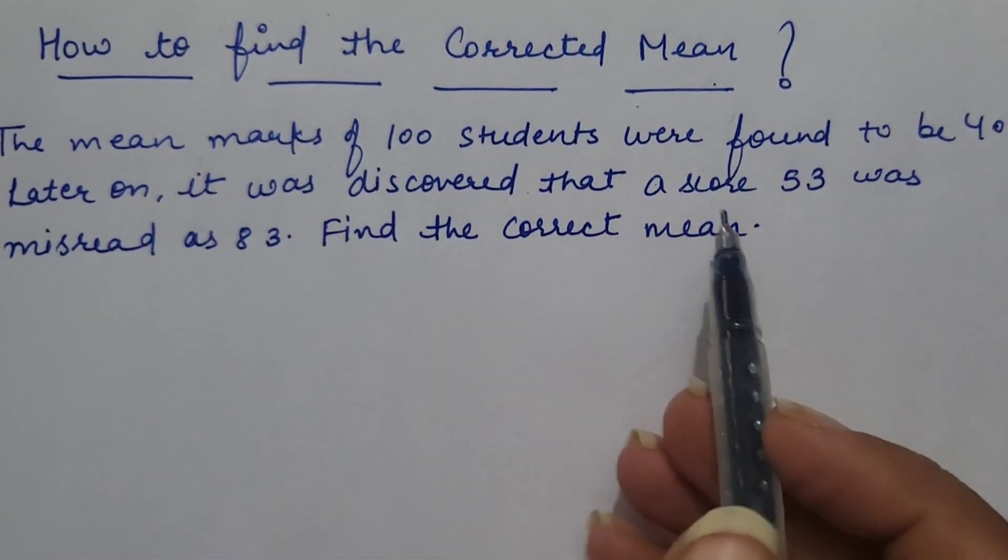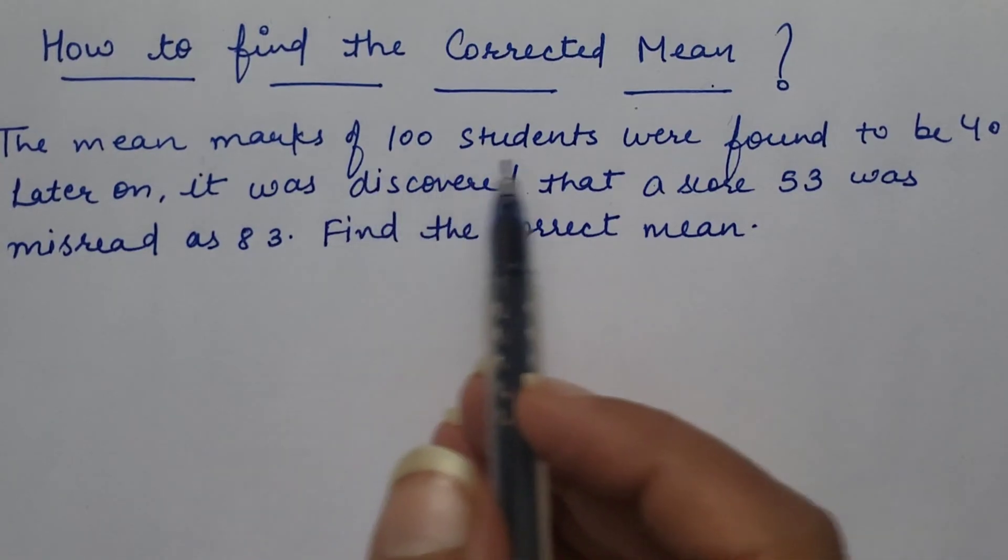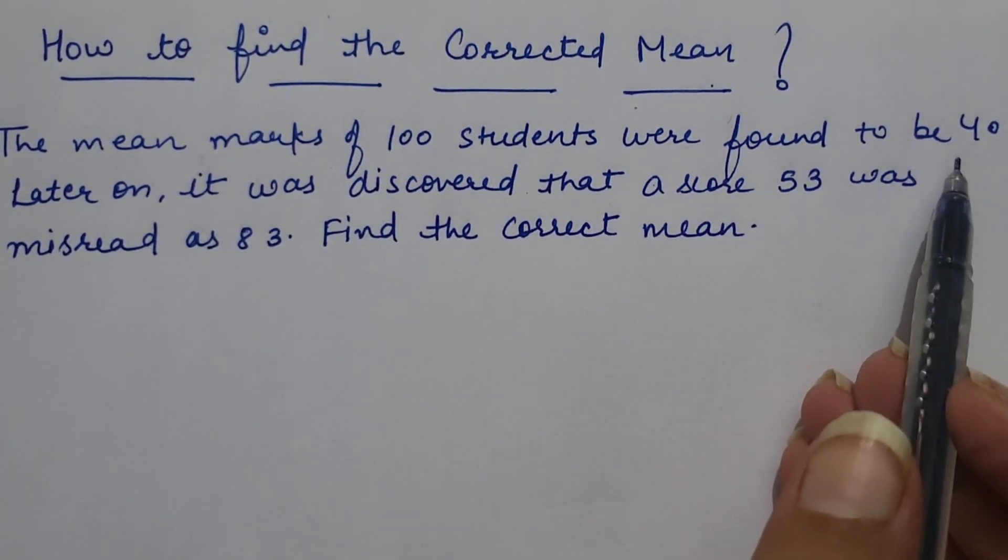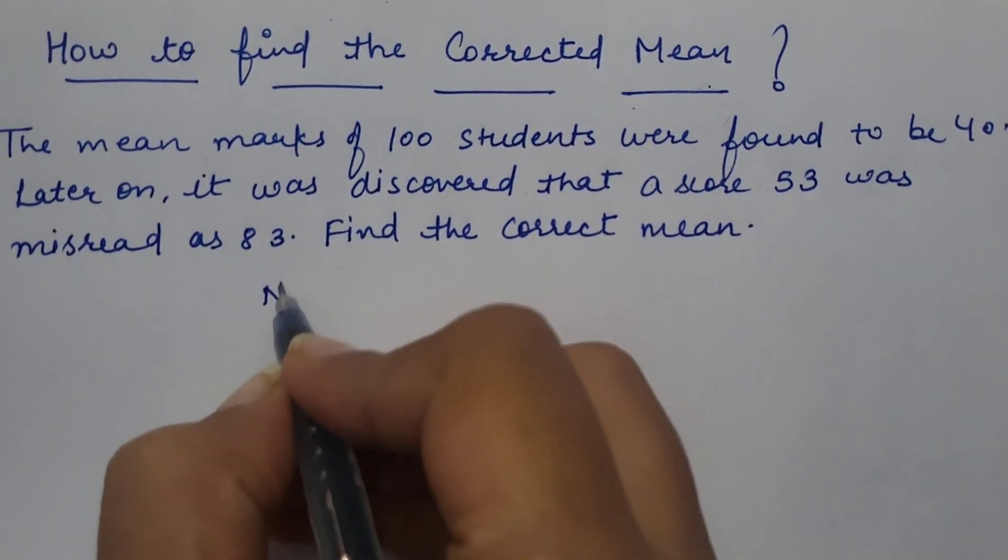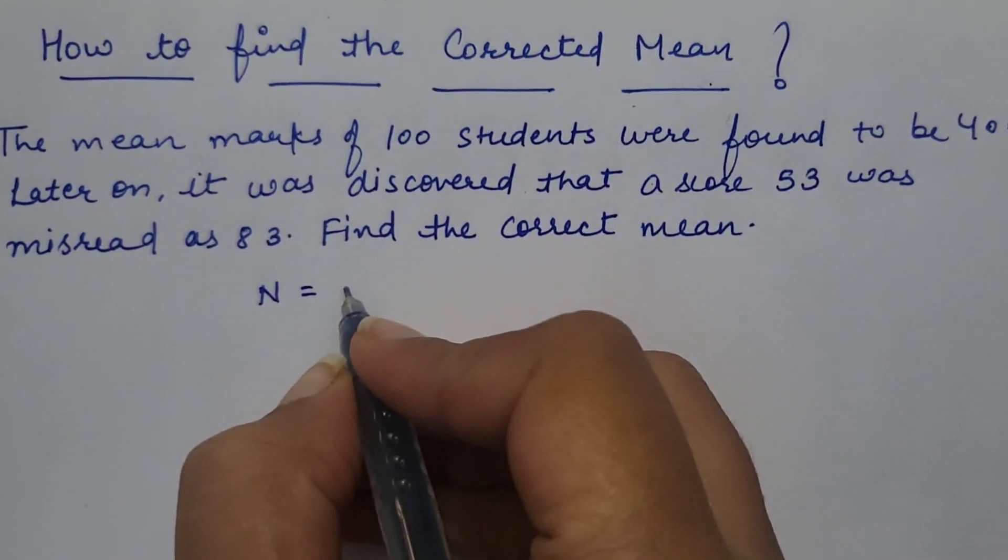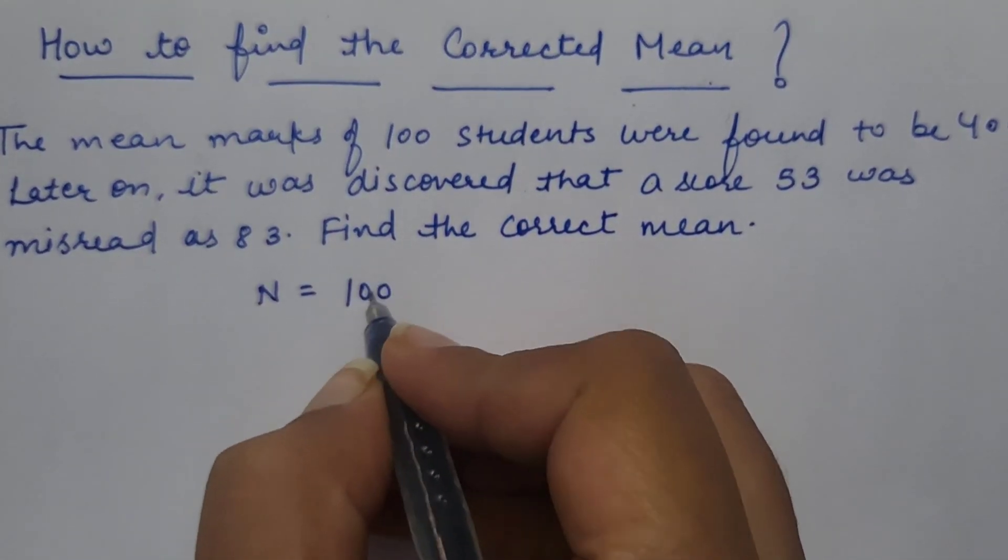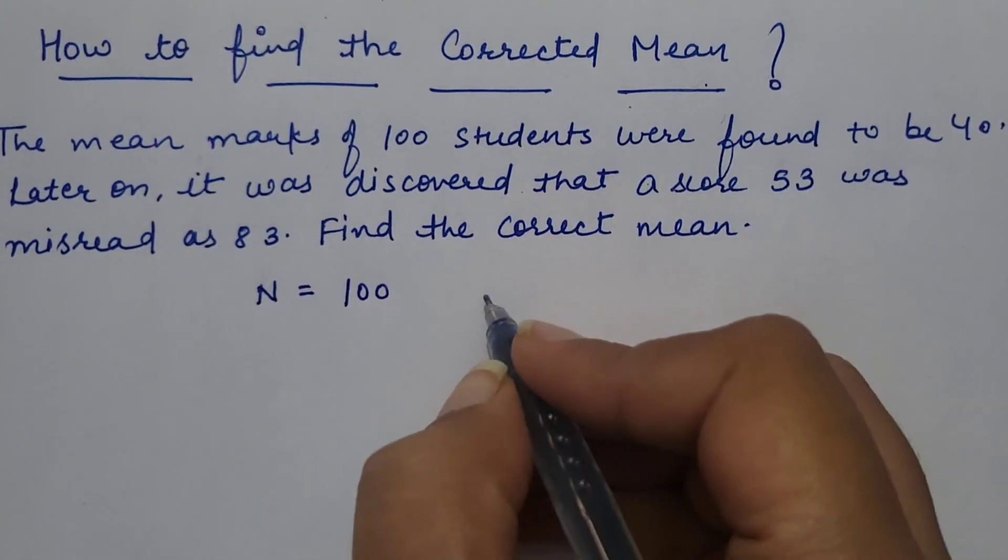Explaining it with the help of an example, mean marks of 100 students were found to be 40, which means number of observations is 100 and mean is 40.